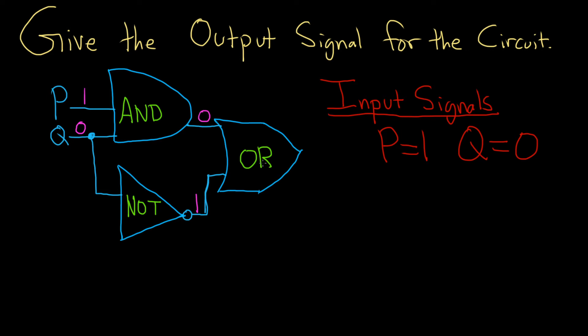And then the last thing to do is figure out what happens after we go through the OR gate. I forgot to put a variable here, so R. So going through the OR gate, we have 0 and 1. So OR is true if at least one of them is true. So we have 1 and 0. So 1 is true, so the output is 1.